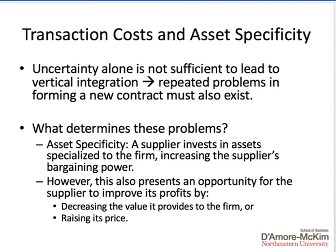In addition to uncertainty, there is the problem of asset specificity. Asset specificity refers to when a supplier in an exchange relationship has to invest in assets that are specialized to the firm being supplied. This increases the supplier's bargaining power, as the supplier can create hold-up — stopping production or holding the firm hostage unless they renegotiate — thus creating additional bargaining power for the supplier and possibly necessitating vertical integration.